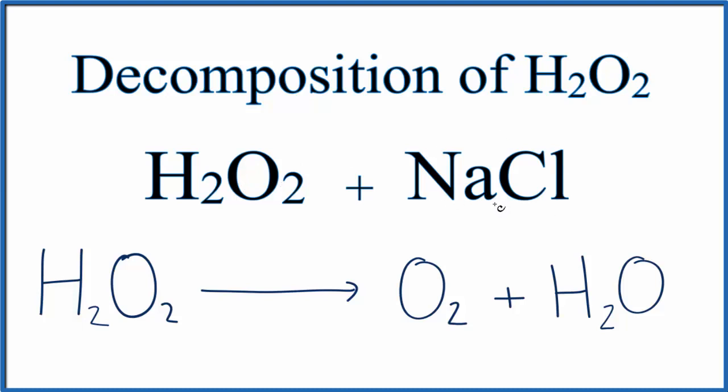NaCl helps make the reaction happen, but it doesn't get really used in the reaction. We don't have NaCl in the reactants, and we don't have them in the products. But we do want to show that NaCl helps speed up the reaction, so we're going to write it right above this yields arrow.